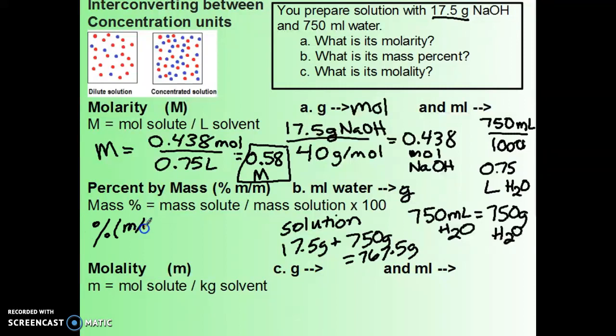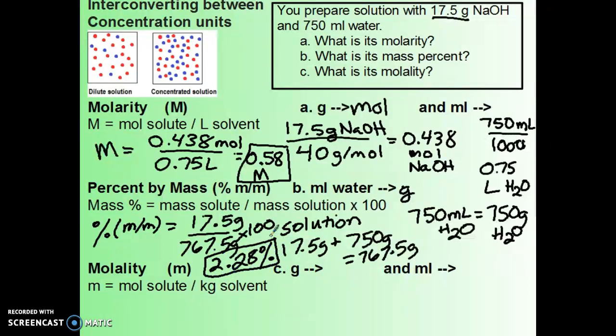Percent is my 17.5 grams of NaOH divided by 767.5 grams of solution times 100. Let me calculate that. 17.5 divided by 767.5 gives me 2.28 percent. That is my mass percent concentration.